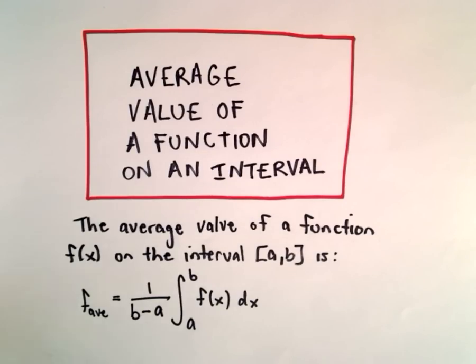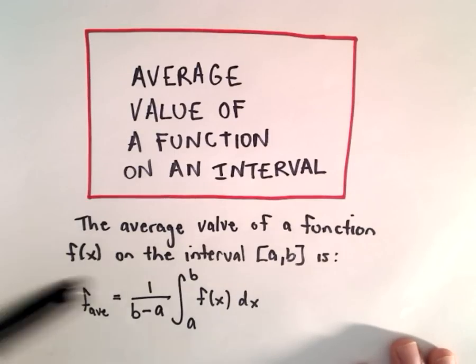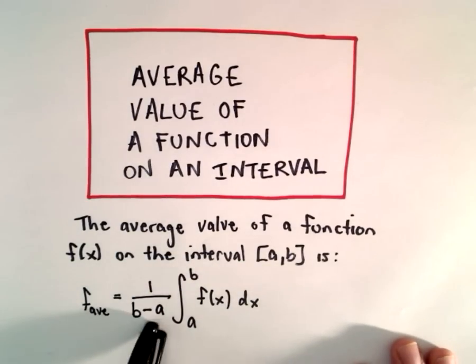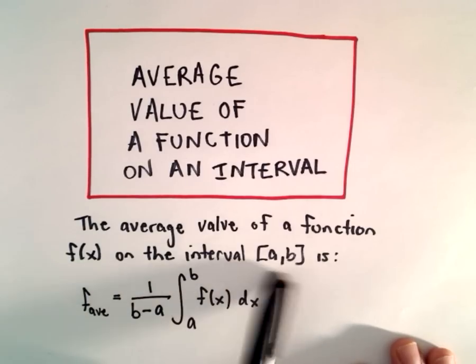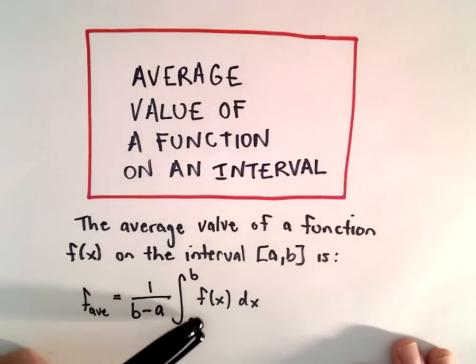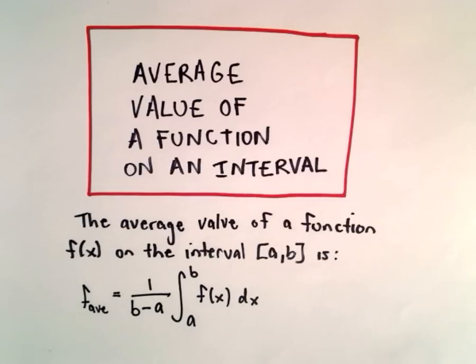So the formula to find the average value of a function f(x) on the interval a to b, what we do is we just take 1 over b minus a, so 1 over the length of the interval, and then we multiply that by the integral from a to b of f(x) dx.